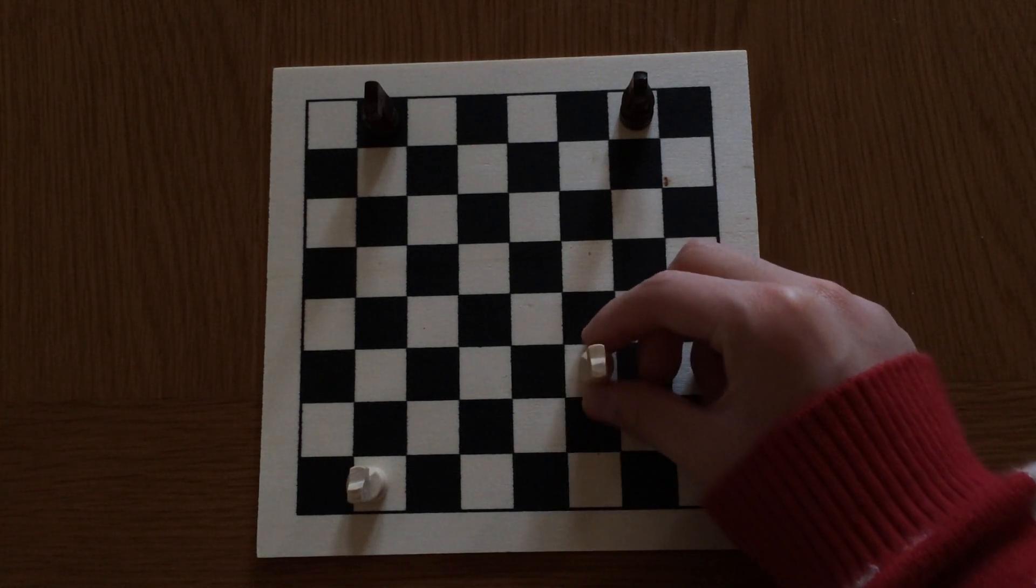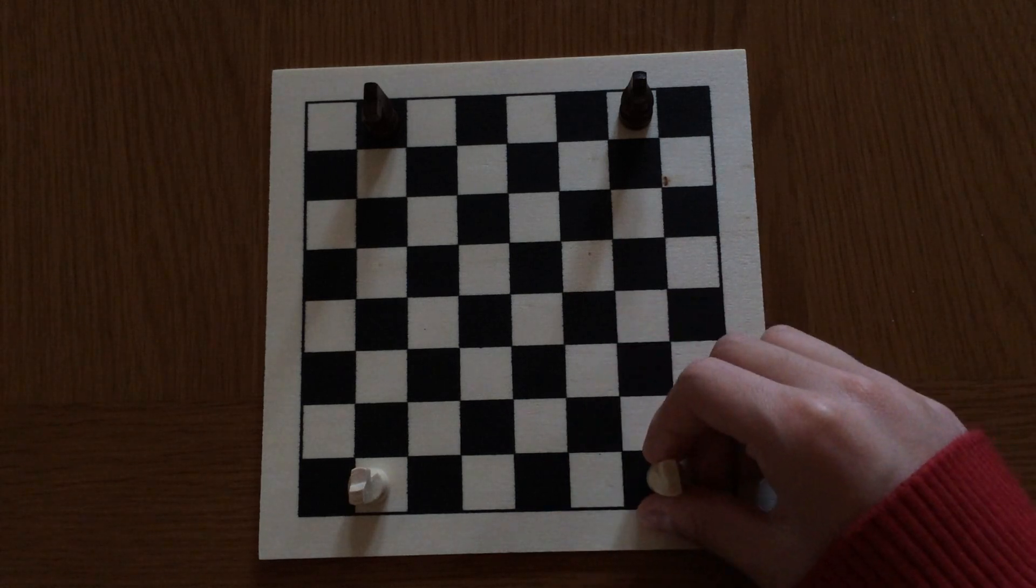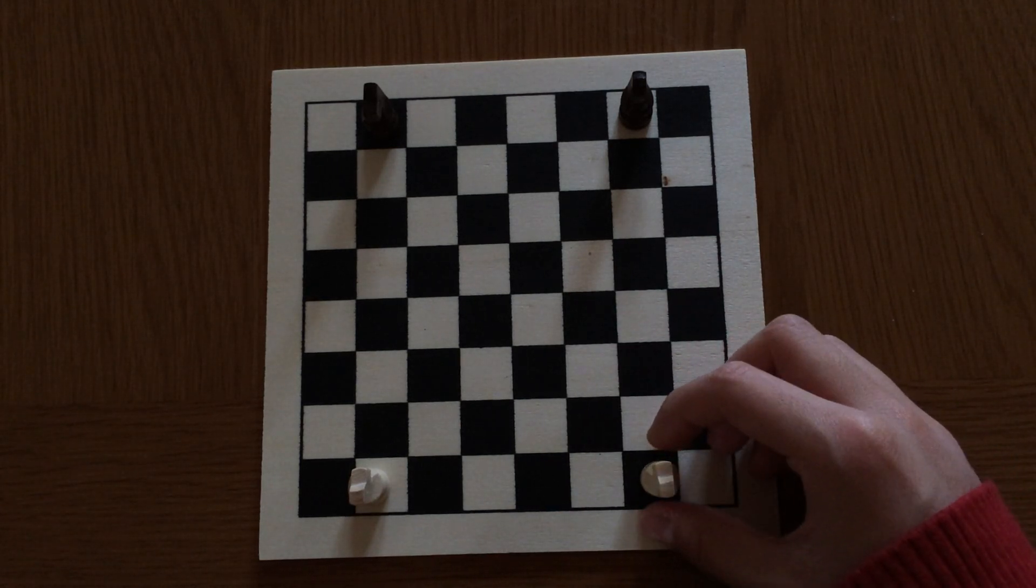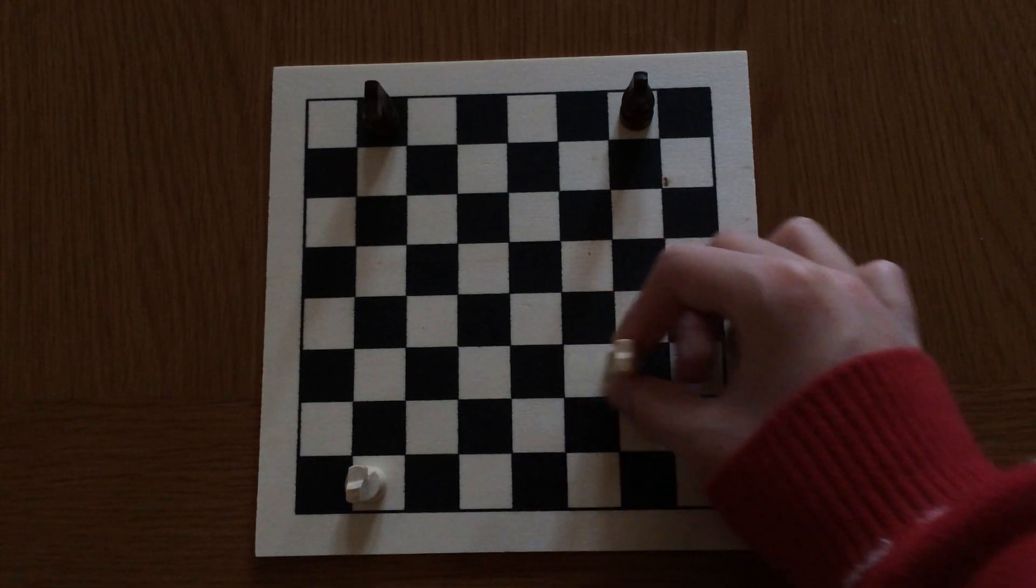Knights go in an L shape, like this, like this. An L shape that is two squares forward, one square to the left or right.